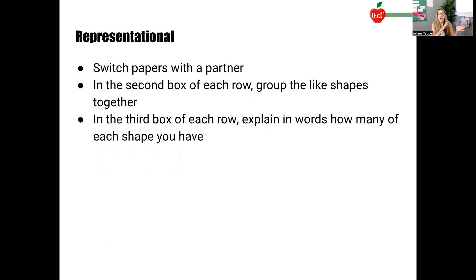So then after they have that first column filled out, they're going to switch papers with a partner. So in the second box of each row, partner B is going to group the like shapes together. So you're going to group all the circles together, group all the triangles together, group all the squares together. And then in the third box of each row, you're going to explain in words how many of each shape you have.